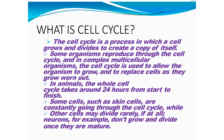Some organisms reproduce through the cell cycle, and in complex multicellular organisms the cell cycle is used to allow the organisms to grow and to replace cells as they wear out. In animals, the whole cell cycle takes around 24 hours from start to finish. Some cells such as skin cells are constantly going through the cell cycle, while other cells may divide rarely if at all. Neurons, for example, do not grow and divide once they are mature.